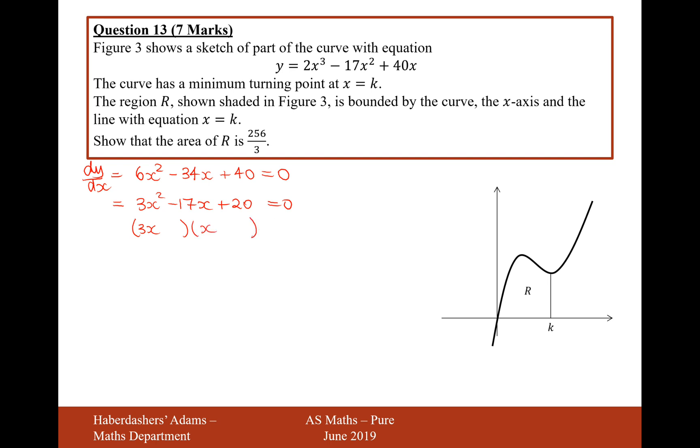and if we factorise this, we're going to get x minus 4, 3x minus 5. So, let's just check that out. So, it's going to be minus 5 and then minus 12, so that would be minus 17. Good. So, therefore, x equals 5 over 3, or x equals 4 are going to be the turning points.